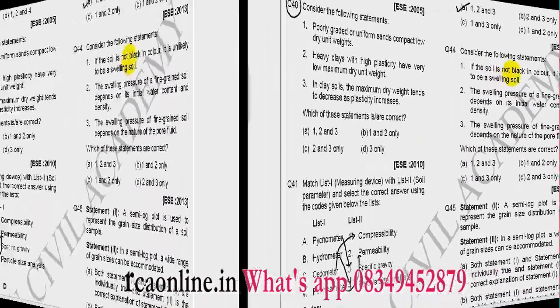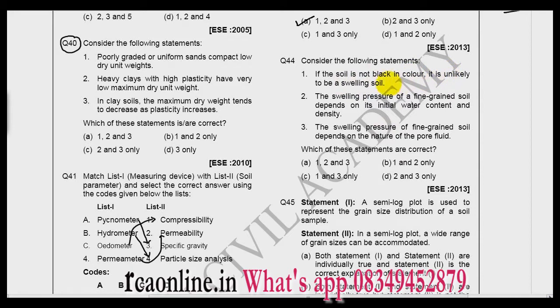Now see the next question. If the soil is not black in color, it is unlikely to be a swelling soil. No, it is not a criteria. Mostly swelling soils are black in color, but that does not mean a soil which is not black cannot have high swelling potential. So this is not right. If you check the option carefully, you will find that D is right, so you don't need to study second and third. This is a very strange thing in engineering services. You can take these type of shortcuts, but be cautious, read the second and third also.